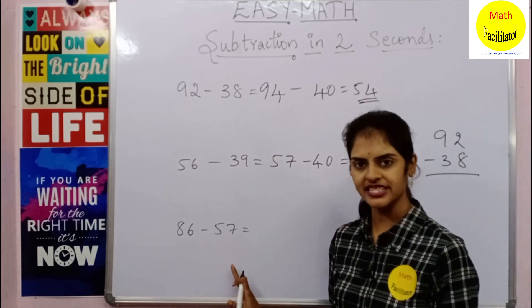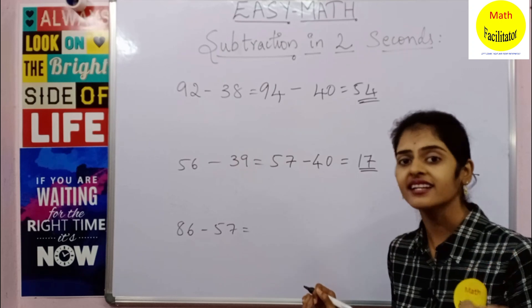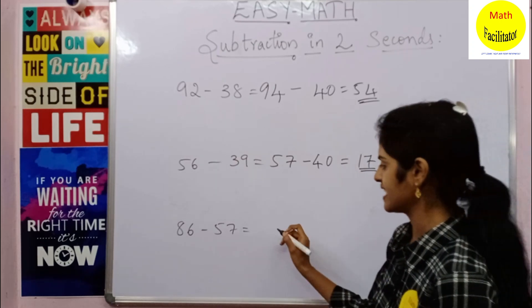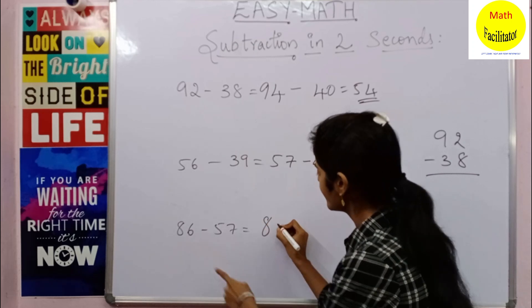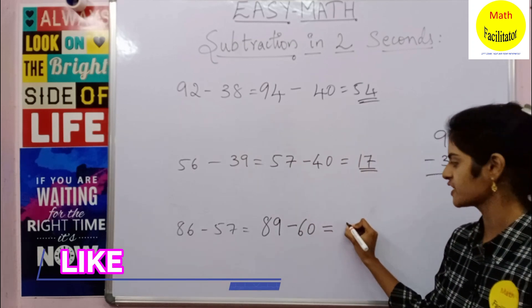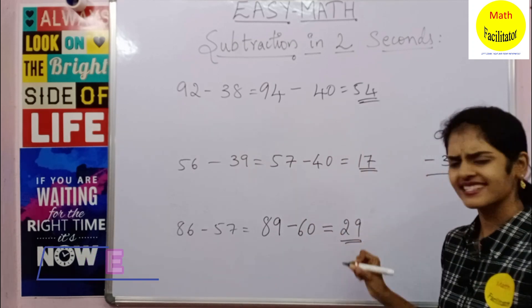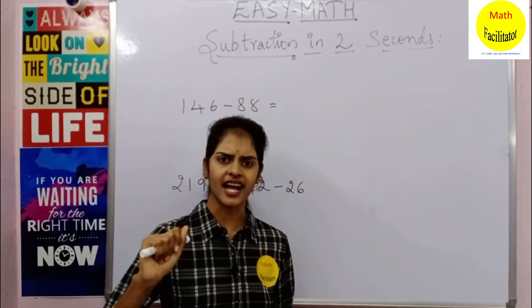The next one, 86 minus 57. So 57 is closer to 60, that means you have to add 3 to make it 60. So you will also add 3 to 86. This is 86 plus 3 is 89 minus 60, which is nothing but 29. Isn't it simple?